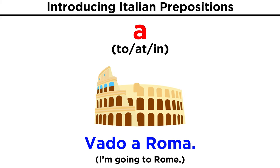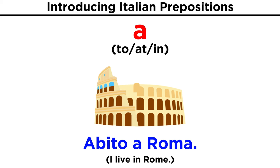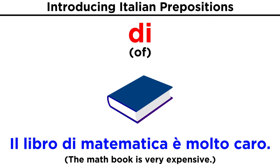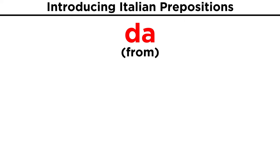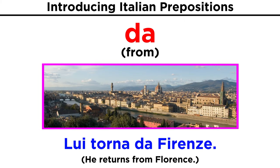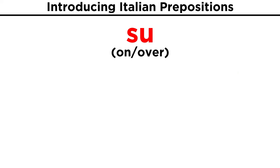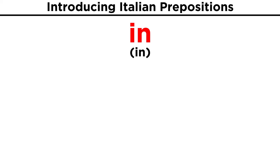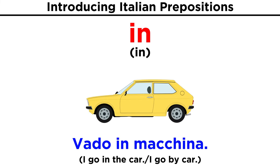Vado a Roma. Abito a Roma. Di means of. Il libro di matematica è molto caro. Da means from. Lui torna da Firenze. Su means on, or over. Vieni su. And in means in. Vado in macchina.